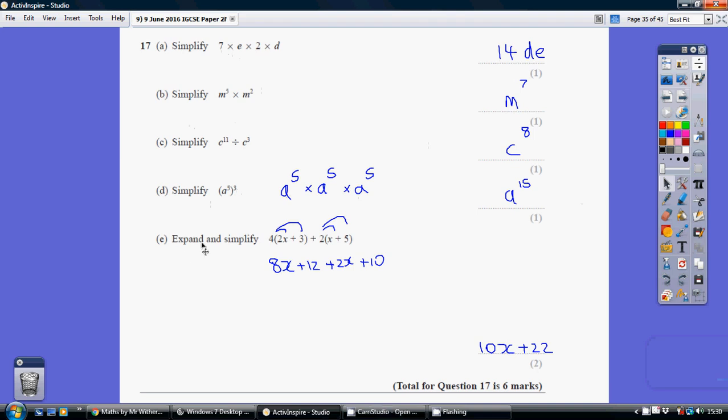Now for part e, we're being asked to expand first of all, which is getting rid of the brackets. So it's a couple of claws and then another couple of claws. So 4 times 2x is 8x, 4 times plus 3 is plus 12, plus 2 times x is plus 2x, and 2 times plus 5 is plus 10.